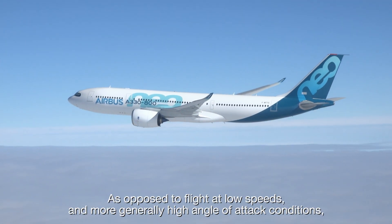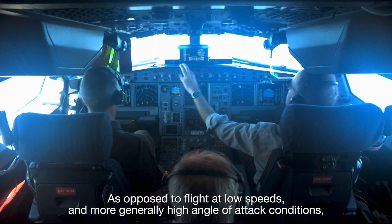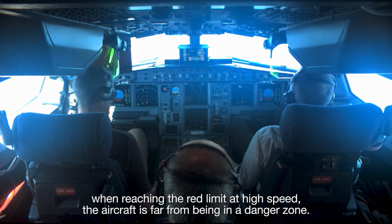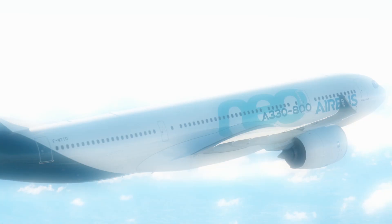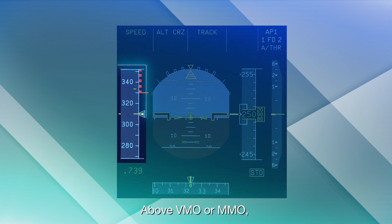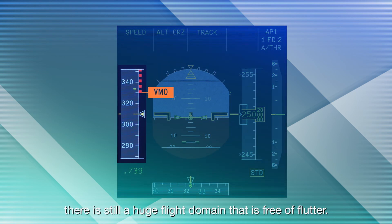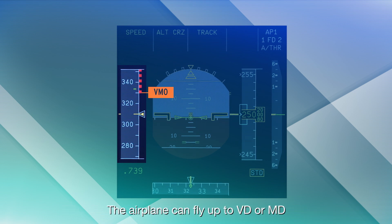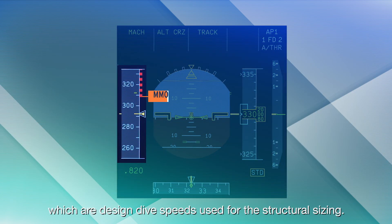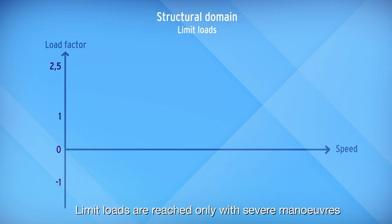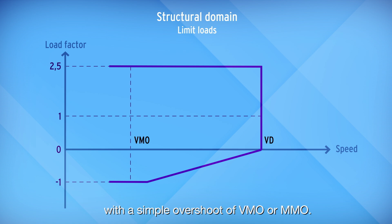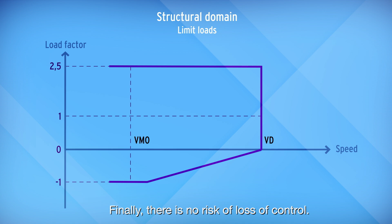As opposed to flight at low speeds and high angle of attack conditions, when reaching the red limit at high speed the aircraft is far from being in a danger zone. Above VMO or MMO there is still a huge flight domain that is free of flutter. The airplane can fly up to VD or MD, which are design dive speeds used for structural sizing. Limit loads are reached only with severe manoeuvres and are not achieved with a simple overshoot of VMO or MMO. Finally, there is no risk of loss of control.